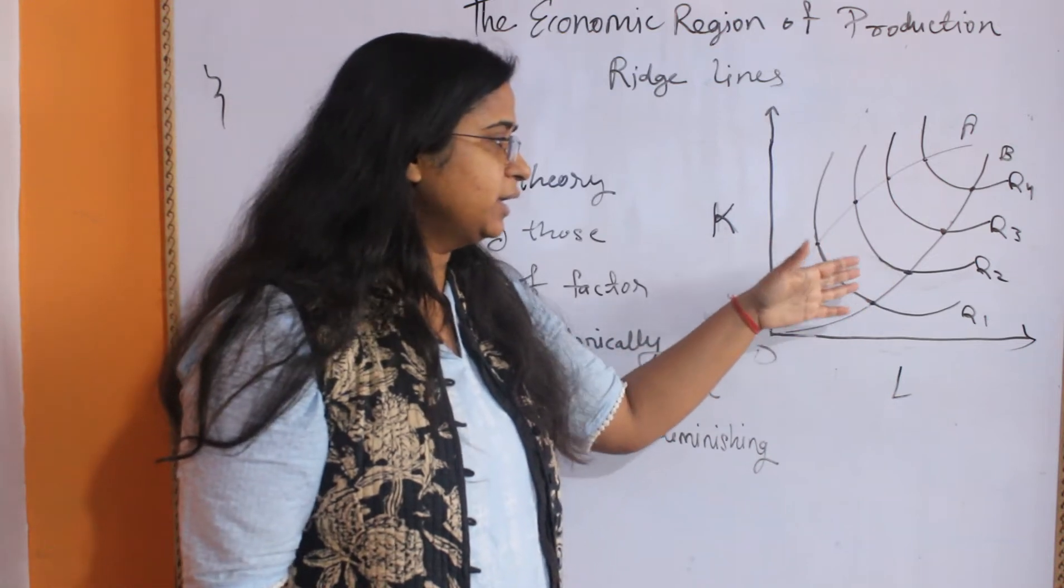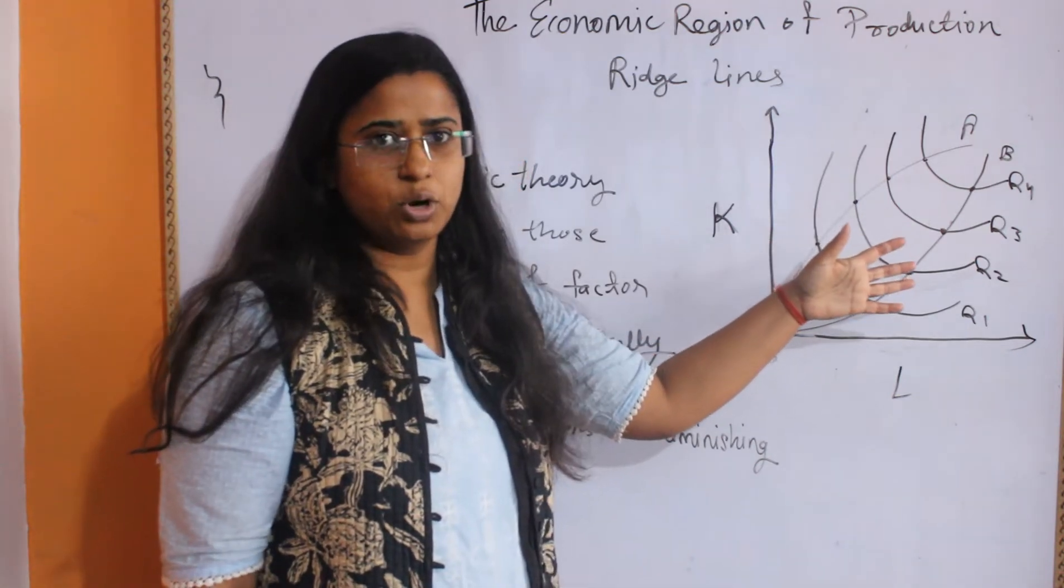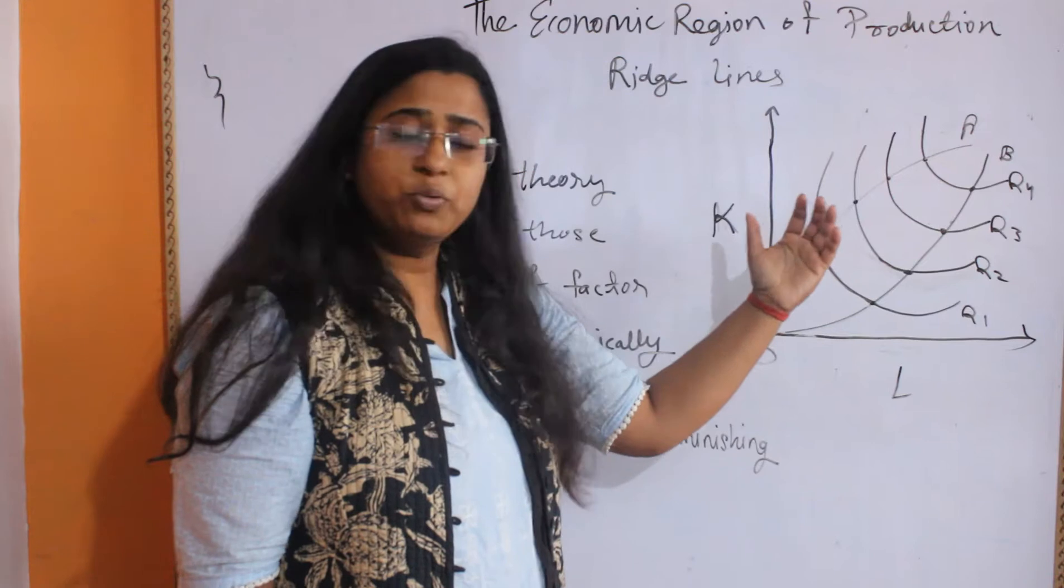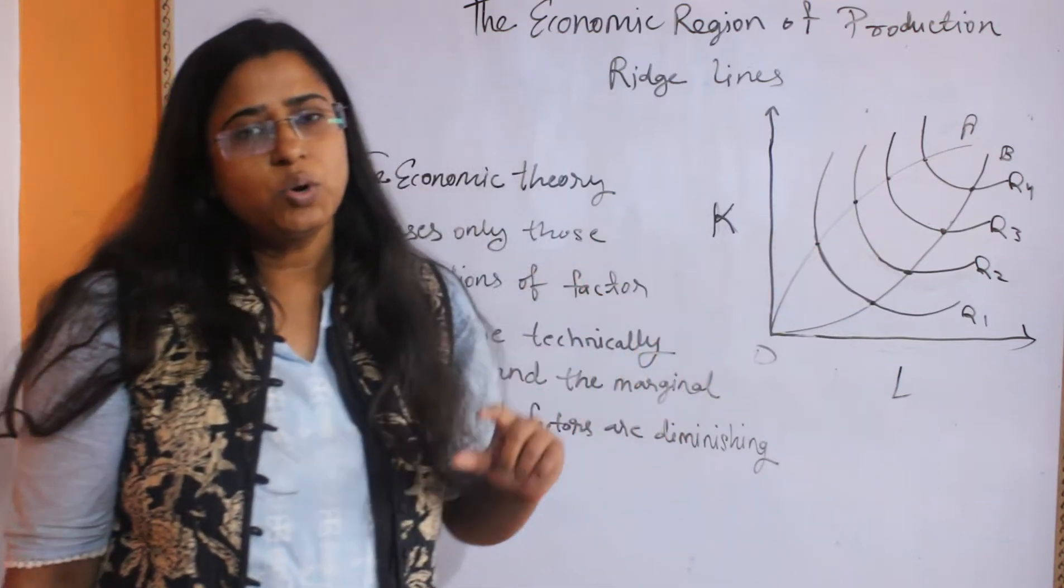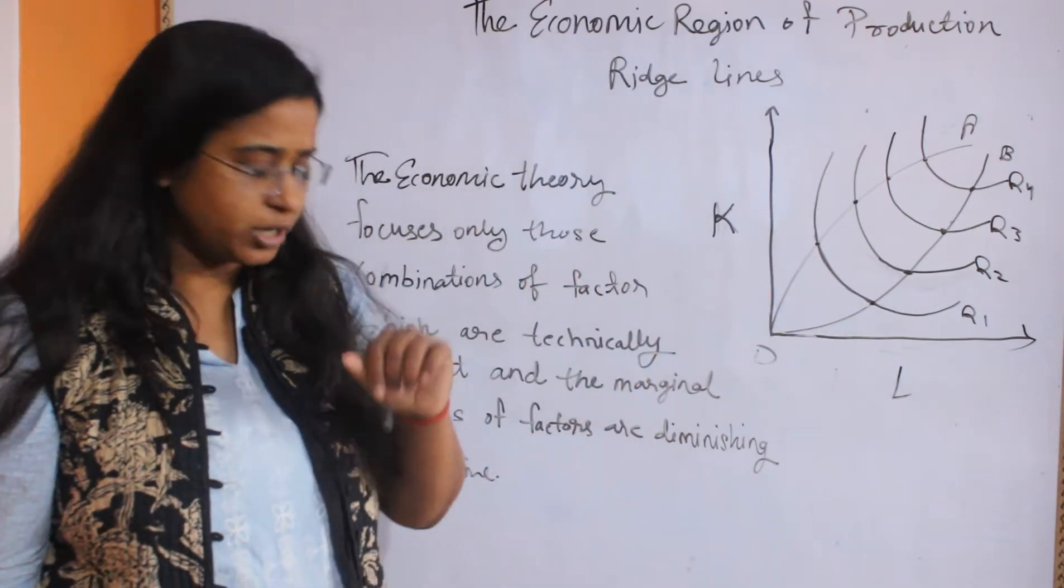You know that each successive isoquant which is right upward to the right shows the higher level of production.